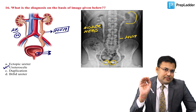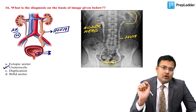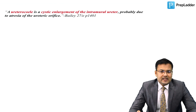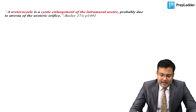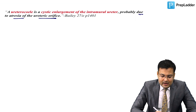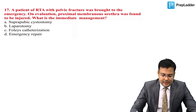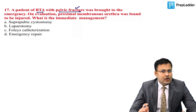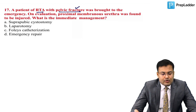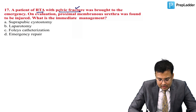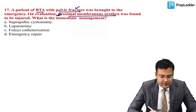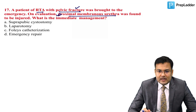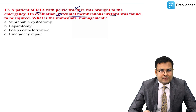Ureterocele can be intravesical (within the bladder) or ectopic (outside the bladder); ectopic ureterocele is associated with duplication of the ureter. Next question: after road traffic accident with pelvic fracture, proximal membranous urethra was found to be injured. What is the immediate management?